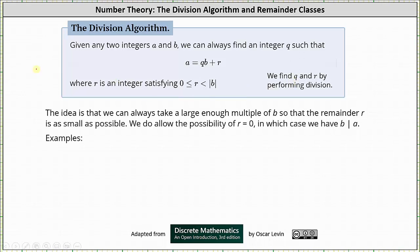The idea is that we can always take a large enough multiple of b so that the remainder r is as small as possible — meaning greater than or equal to zero and less than or equal to the absolute value of b. We do allow the possibility of r equals zero, in which case we have b divides a.